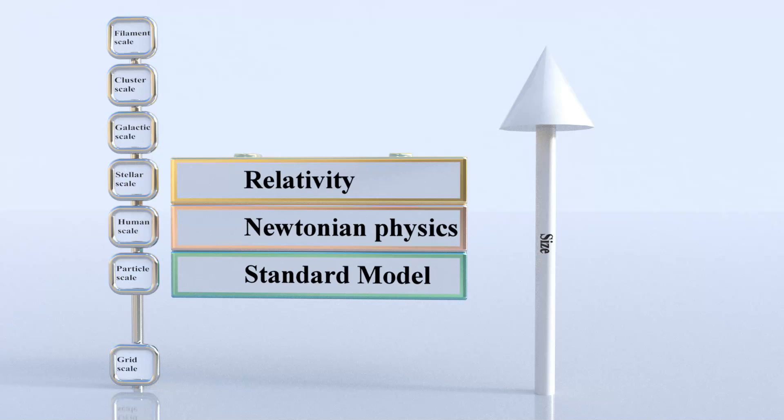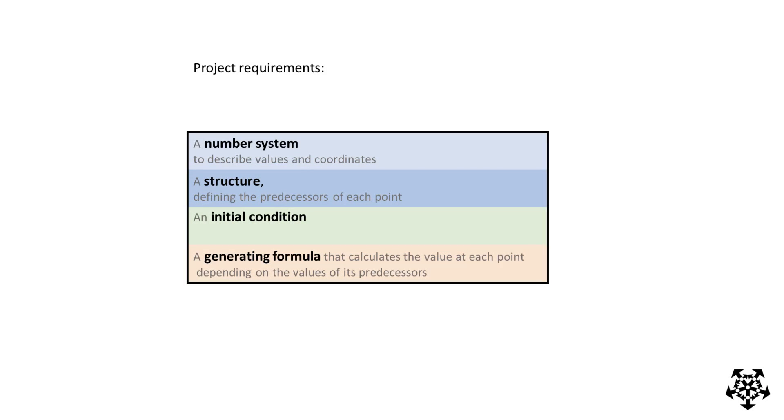At smaller scales we have the standard model of particles. My contention is that this is not the lowest level and this is not the right place to search for a final theory. Instead at the grid scale there is an actual lowest level of physics with the four requirements we laid out before. A number system, a structure, an initial condition and a generating formula.